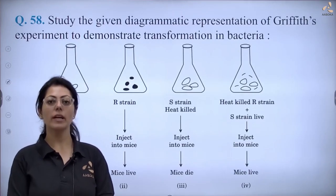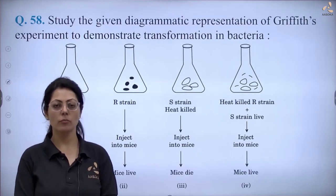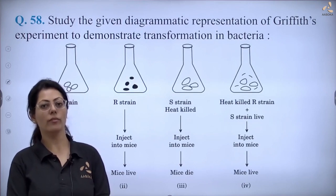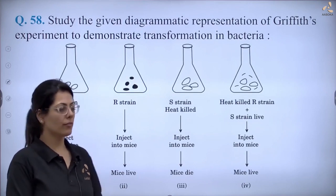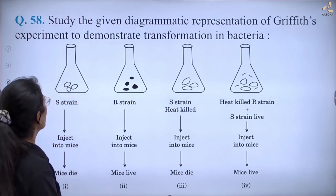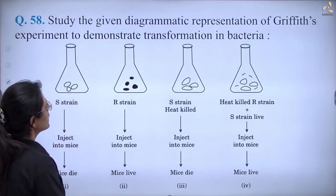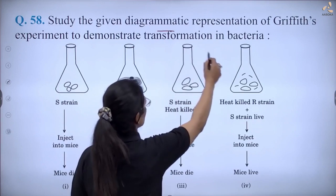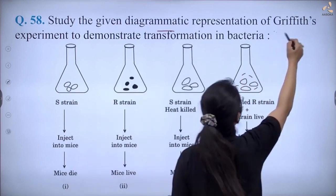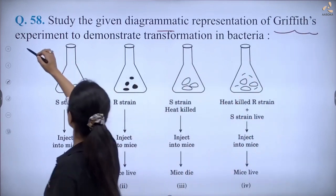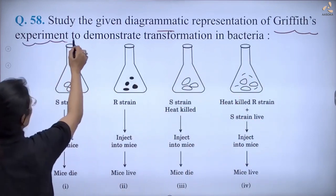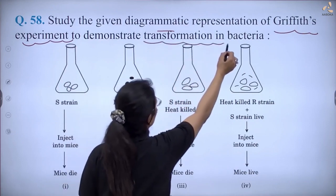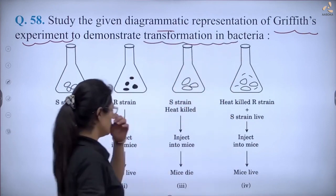Hello students, we are discussing the Term 1 Biology paper for Grade 12. Question 58 says: study the given diagrammatic representation of Griffith's experiment. What was this experiment? It was on transformation — bacterial transformation.